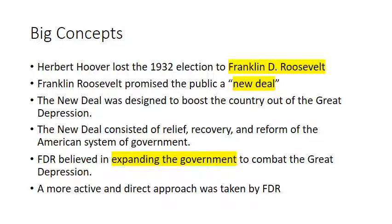From our previous lecture, Herbert Hoover struggled with the Great Depression. He attempted many things to help the United States recover, but in the end he really failed to communicate with the American people and to show any type of empathy for their struggles. So in 1932, Herbert Hoover is up against Franklin Roosevelt from New York. Franklin Roosevelt is far more the effective politician, he knows how to speak to the American people, and he promises the public a New Deal.